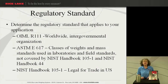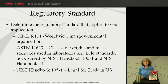ASTM E617 covers classes of weights and mass standards used in laboratories and field standards not governed by NIST Handbook 105-1 and NIST Handbook 44. This is primarily used for the higher accuracy class weights here in the United States. If there is a requirement internationally and you're also going to be doing business in the United States, you might want to look at these guidelines as well to make sure you've considered all requirements. NIST Handbook 105-1 is used for legal-for-trade in the United States.